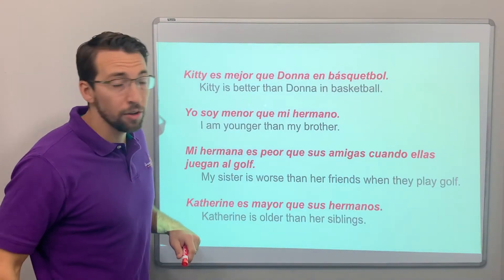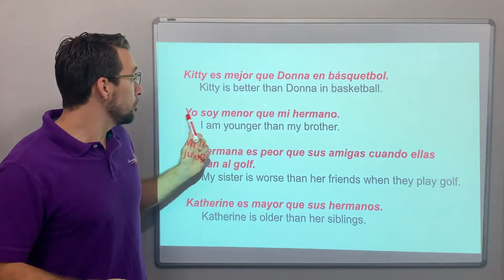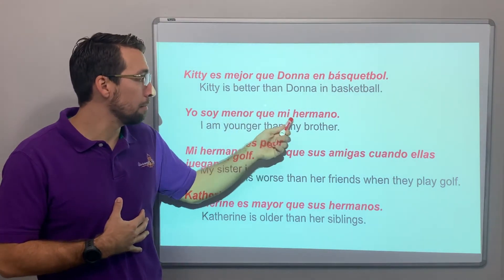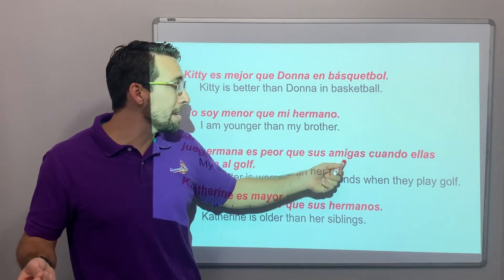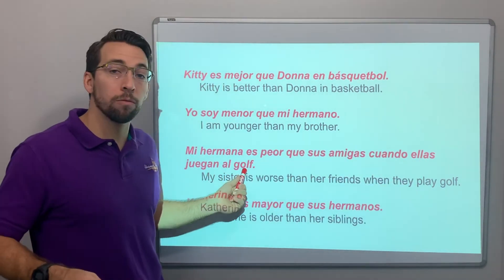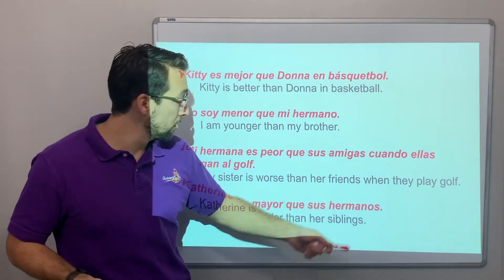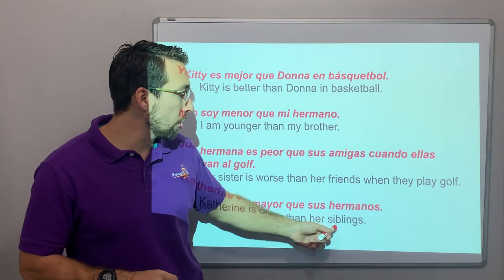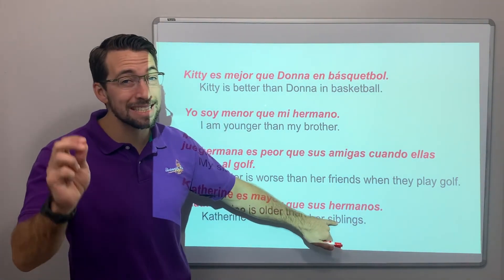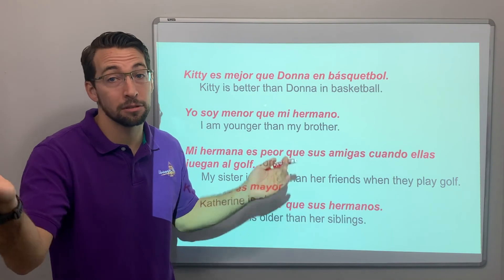Some examples: Kitty es mejor que Donna en básquetbol — Kitty is better than Donna in basketball. Yo soy menor que mi hermano — I am younger than my brother. Mi hermana es peor que sus amigas cuando ellas juegan al golf — my sister is worse than her friends when they play golf. Catherine es mayor que sus hermanos — Catherine is older than her siblings. Hermanos can mean brothers specifically, or siblings when it's co-ed, so siblings is always a safe translation.